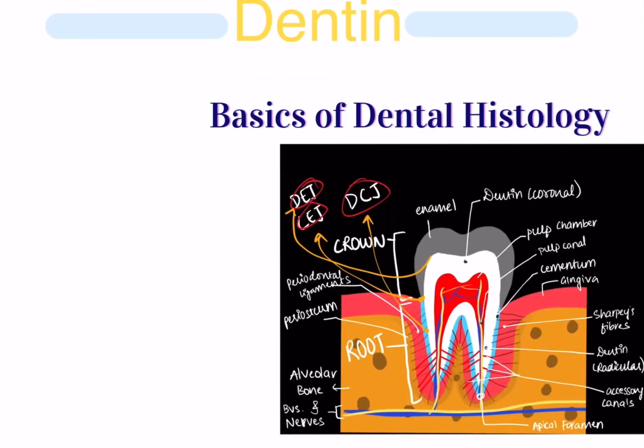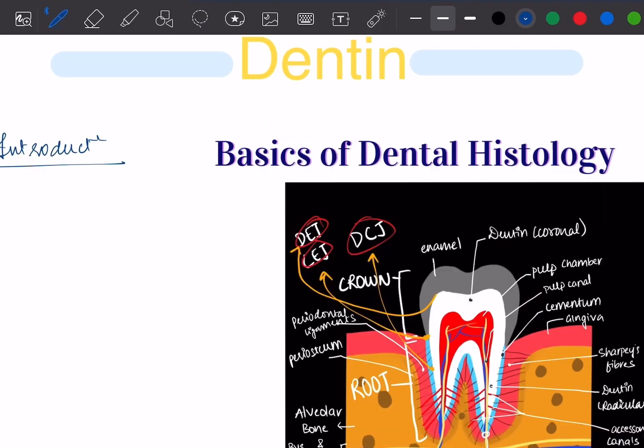Dentine happens to be the second layer of the tooth. First layer is enamel and the second layer is dentine. It provides bulk to the tooth and it has tubules throughout its surface.